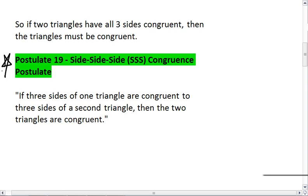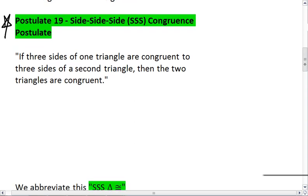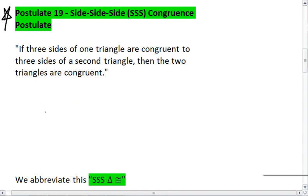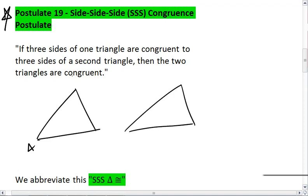And that says that if three sides of one triangle are congruent to three sides of a second triangle, then the two triangles are congruent. So if ABC and XYZ have all matching congruent sides, then triangle ABC must be congruent to triangle XYZ.